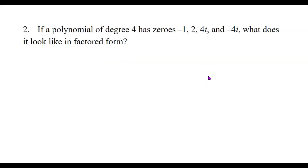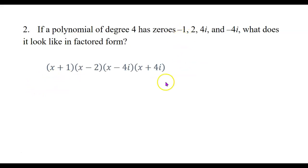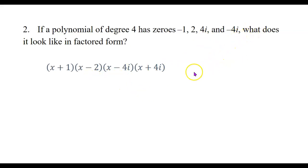If a polynomial of degree 4 has zeros negative 1, 2, 4i, and negative 4i, what does it look like in factored form? For negative 1 to be a zero, x plus 1 has to be a factor. For 2 to be a zero, x minus 2 has to be a factor. For 4i to be a zero, x minus 4i has to be a factor. And for negative 4i to be a zero, x plus 4i has to be a factor. So that's what it looks like in factored form.